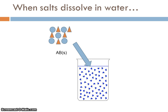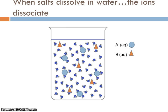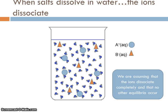When salts dissolve in water — if we had a picture model of an ionic solid dissolving in water — when the salts dissolve, the ions dissociate, they separate, they get solvated by the water molecules and move away from each other. We're making the assumption that the ions dissociate completely and there's no other equilibria going on, so we'll keep it as simple as possible.